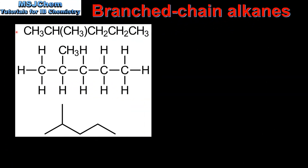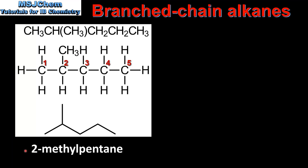Next we look at some more examples. In this molecule the longest continuous carbon chain is 5 carbon atoms. This gives the stem of the name, which in this example is pentane. We have a methyl group on carbon number 2. Therefore the name of the compound is 2-methylpentane.